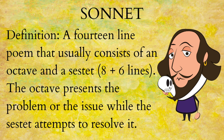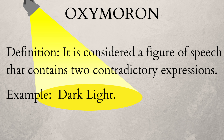The next one is an oxymoron, and it is considered a figure of speech that contains two contradictory expressions. For example, 'the dark light' — how can a light be dark? Or 'the thin, fat person' — that doesn't make sense because they're completely contradicting one another. So that is an oxymoron.